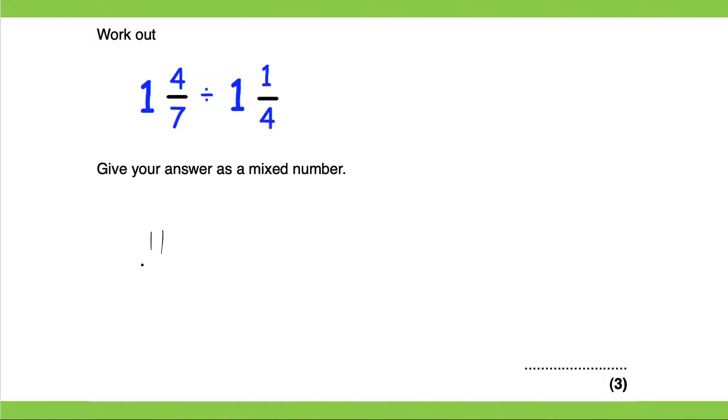So this would be 11 over 7 divided by 5 over 4. So always remember to keep, you keep it and then you flip it and then you change it. Okay so let's keep eleven sevenths. Let's change, let's flip 5 over 4 to 4 over 5 and let's change the sign.